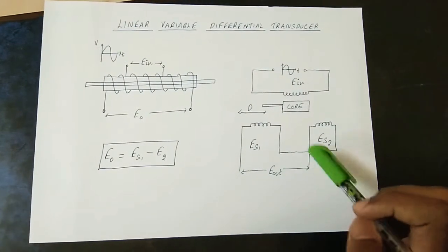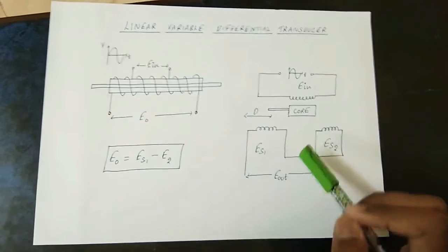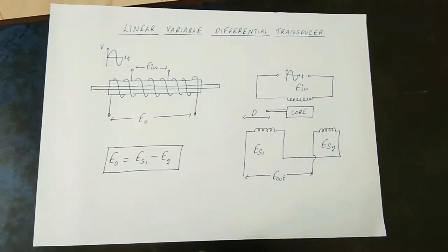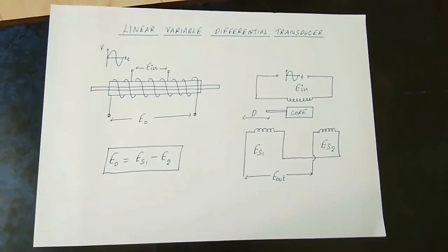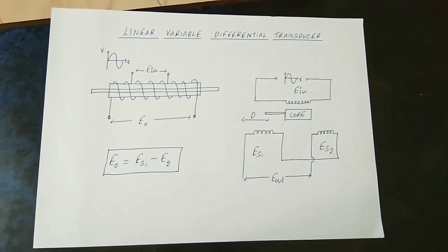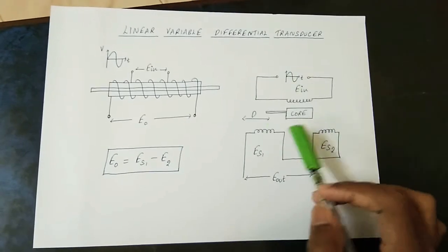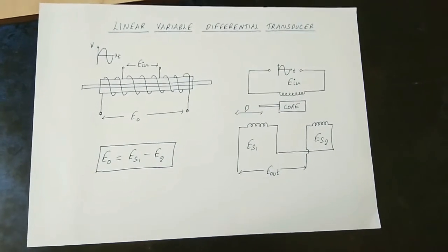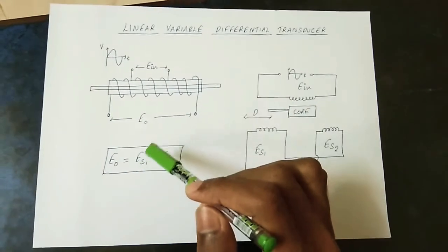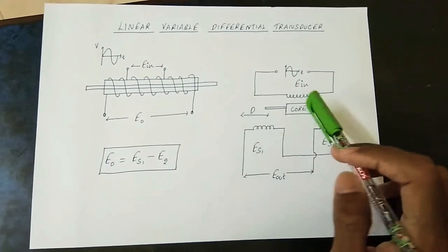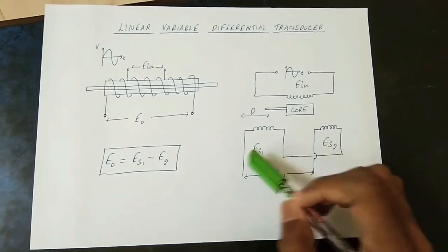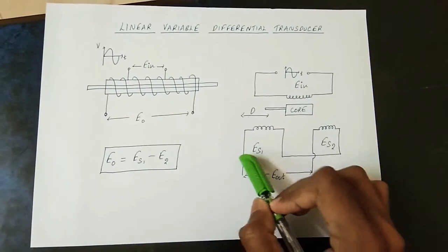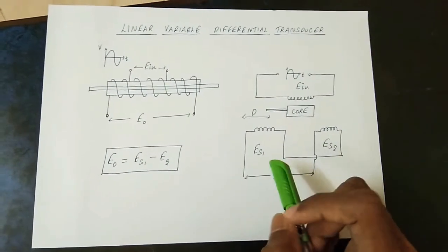If you are going to get EMF, you are going to get two types of coils: ES1 and ES2. Two types of voltages are induced in two coils. This is the series opposition concept — this is the phase opposition. The core is a mobile core; that is, it will move. When the core is at the center position, the two voltages ES1 and ES2 are equal, and the difference — ES1 minus ES2 — is equal to zero.